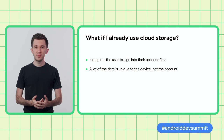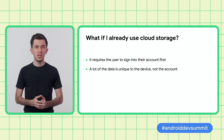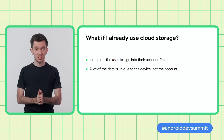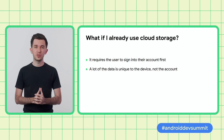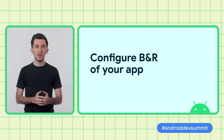For example, let's say that you have an onboarding tutorial that you show once per device and not per account, or a settings screen within your app where the user can customize how they want the app to look and behave on this specific device. The point is your users would really love for all these preferences to be already set correctly when they first launch the app on their new phone. With that said, let's look at how you can configure Backup and Restore for your Android app.